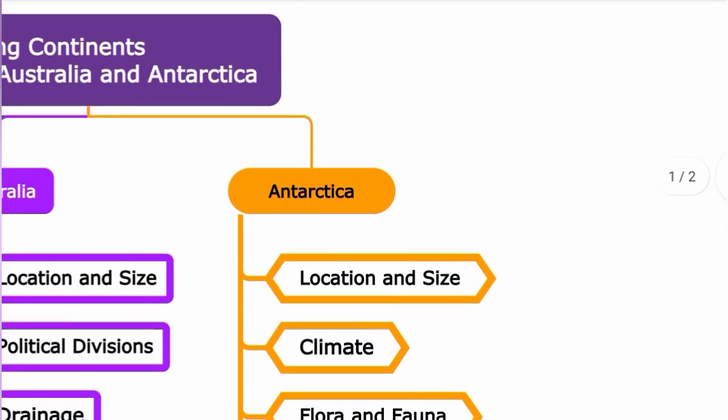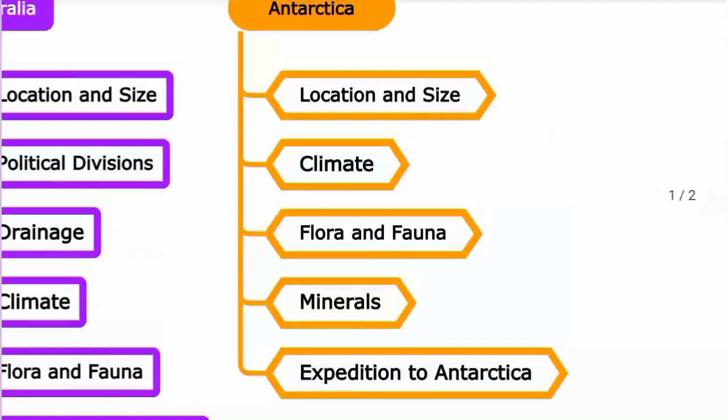Antarctica covers location, size, and climate. It has a freezing, extremely cold climate. Flora and fauna are limited — temperatures are below freezing point, so vegetation consists of algae, mosses, liverworts, lichens, and microscopic fungi.